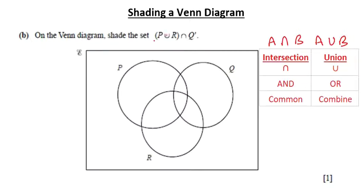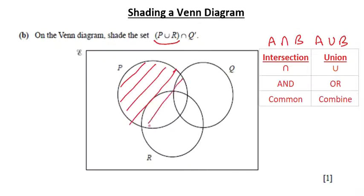We've got this Venn diagram and we have to shade the set (P ∪ R) ∩ Q'. In questions like this, we first think about what's in the brackets — just like with normal numbers, you resolve what is in the brackets first. So we have P union R, which means everything that is in either P or R or in both. So everything in P is going to be shaded, and we combine that with everything in R. That gives us P union R.